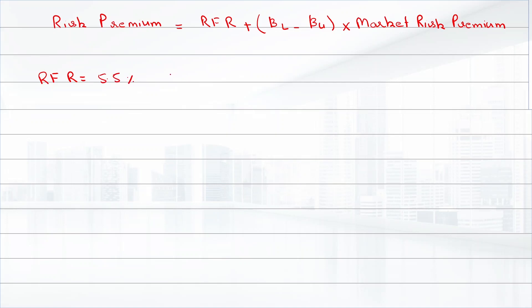Unlevered beta, beta unlevered, is equal to 1. Beta levered is 1.6, and the risk premium is equal to 6%. We can now calculate the risk premium.